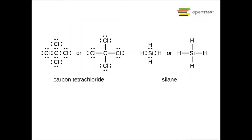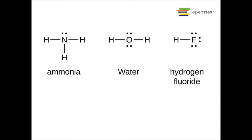Here are some examples. Carbon tetrachloride and silane are examples of group 14 elements — carbon and silicon — each needing four electrons to fill their octet, so they form four bonds, giving nice filled octets. Ammonia has nitrogen from group 15, needing three bonds. Water has oxygen from group 16, needing two bonds. And fluorine from group 17 only needs one bond and one electron to fill its octet.